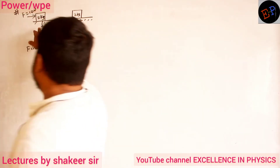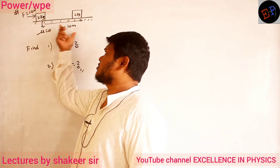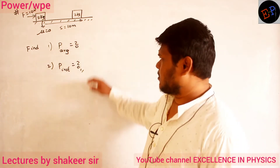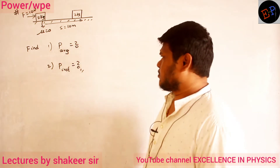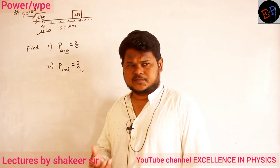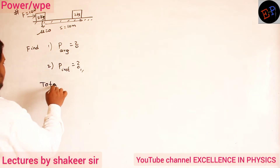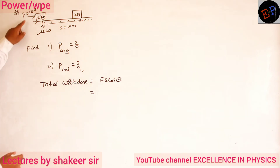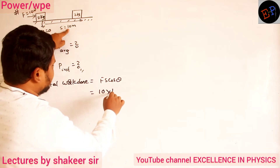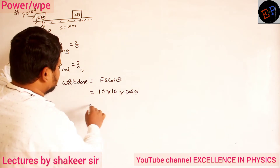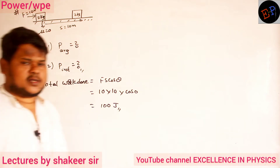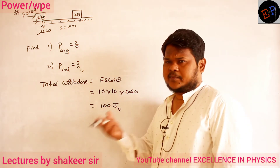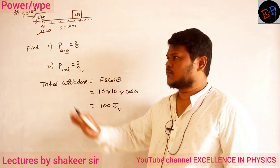Let us do one small question. Consider a body of mass 2 kg; we are applying a force of 10 N and this body moves a distance of 10 m. The coefficient of friction is 0, so there is no friction. I want to calculate average power and instantaneous power. To calculate power, I first require work done. Then I need to find the time taken for the body to travel 10 meters.